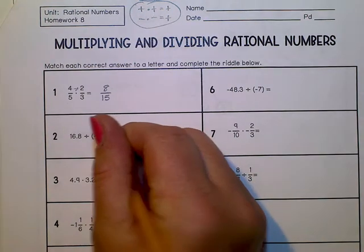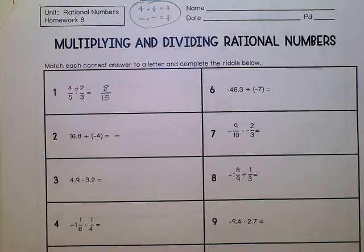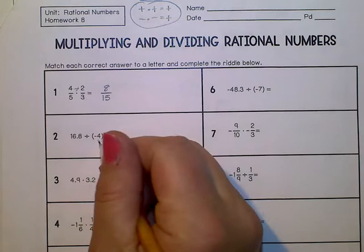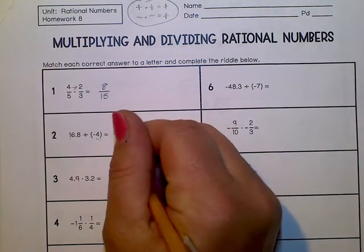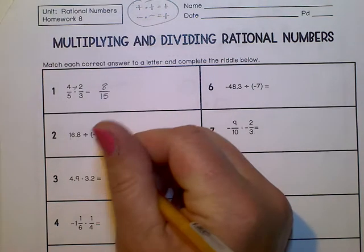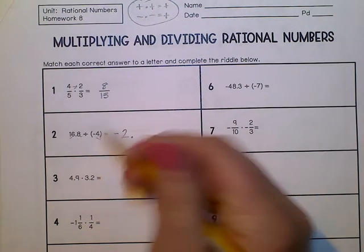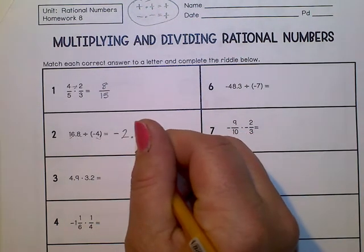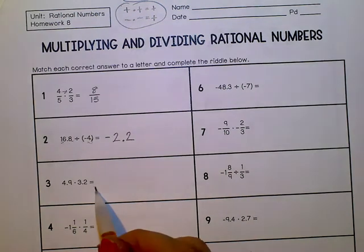Next, we have 16 and 8 tenths divided by a negative number, so our answer is going to be negative. We divide by four: four goes into sixteen four times, giving us four wholes. Four goes into four sixteen times — and then we have 8 tenths, which can go into there twice. So you should have negative 2 and 2 tenths.